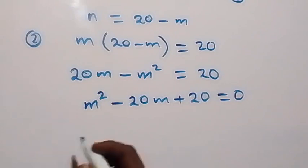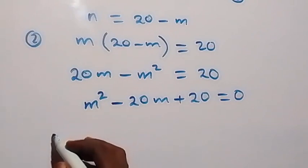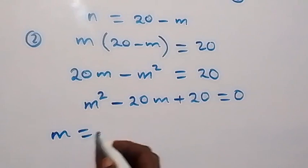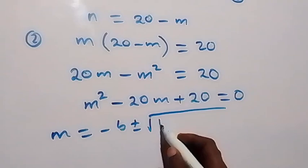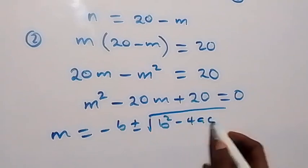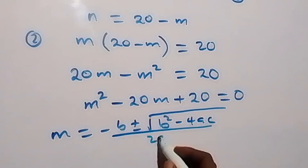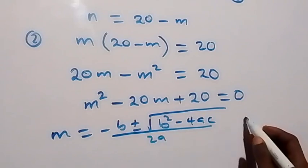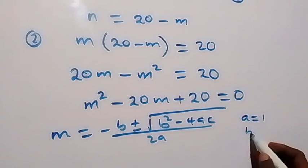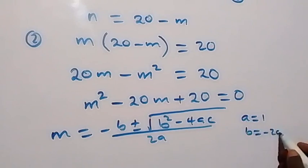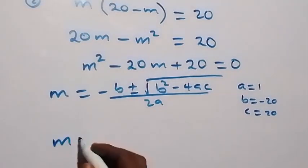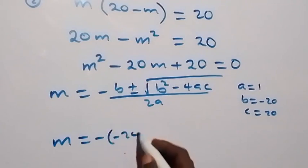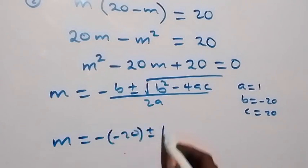We now have a quadratic equation that we can solve using the formula: m equals negative b plus or minus square root of b squared minus 4ac, all over 2a. In this case, a equals 1, b equals negative 20, and c equals 20.